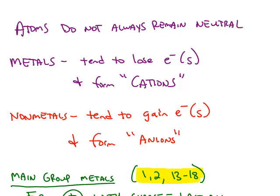Previously, we talked about an atom being electrically neutral. The number of protons equals the number of electrons. It turns out that atoms don't remain that way.